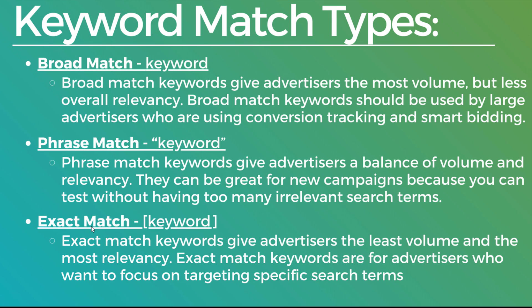There's no real order for the keyword match types, but they are different in the way that they perform and the way they're going to make your campaign perform. Broad match keywords give advertisers the most volume but the least overall relevancy. Phrase match keywords give advertisers a balance of volume and relevancy, and exact match keywords give advertisers the least volume and the most relevancy.